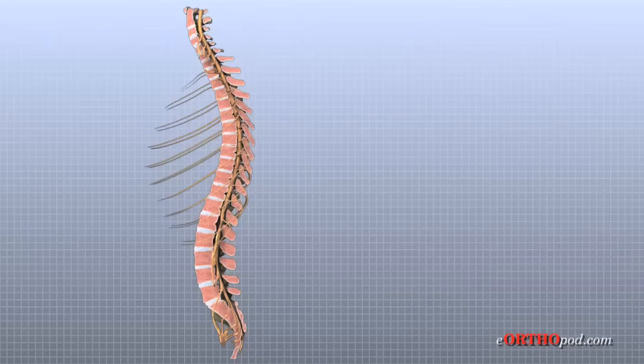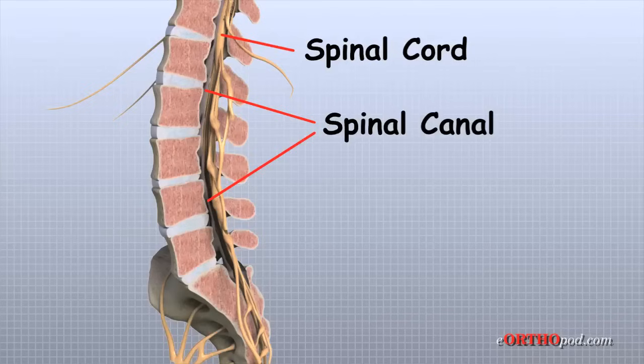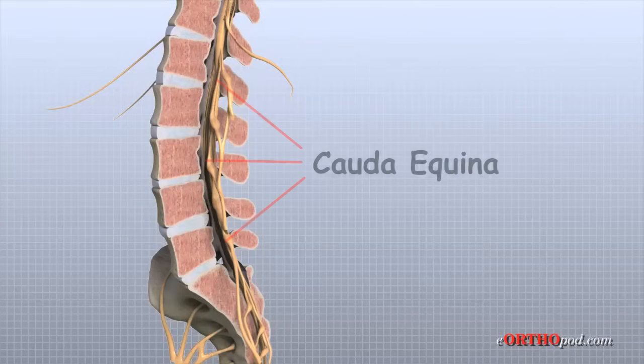The spinal cord extends from the brain to the L2 vertebra. Below this level, the spinal cord splits into a bundle of nerves that goes to the lower limbs and pelvic organs. The Latin term for this bundle of nerves is cauda equina, meaning horse's tail.